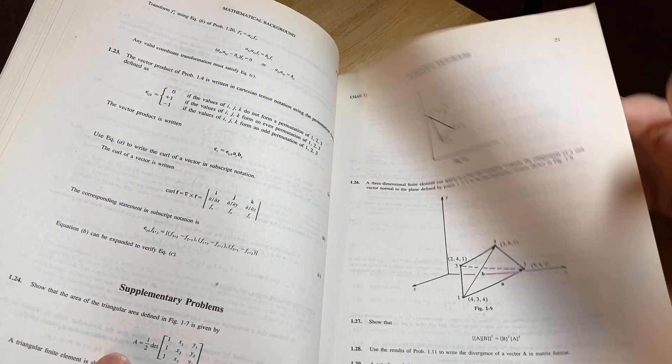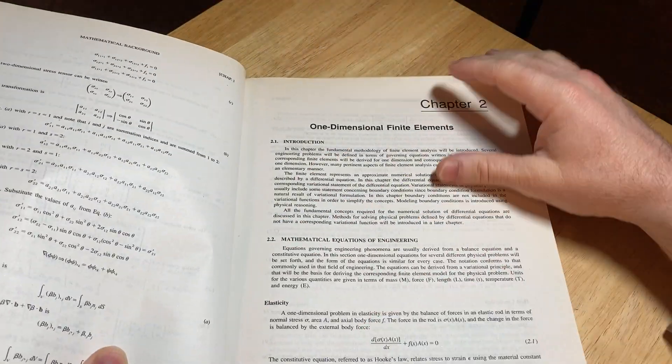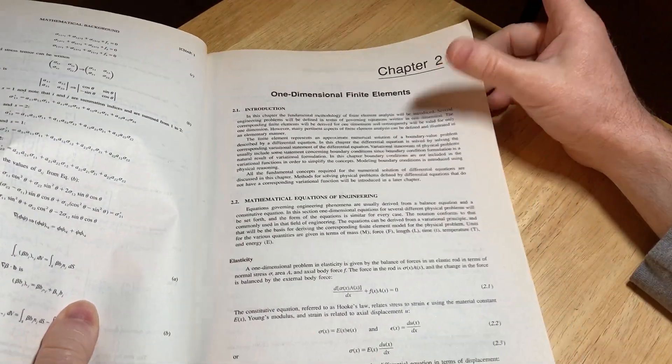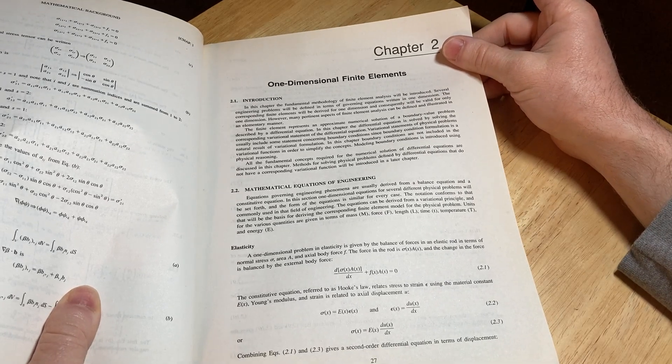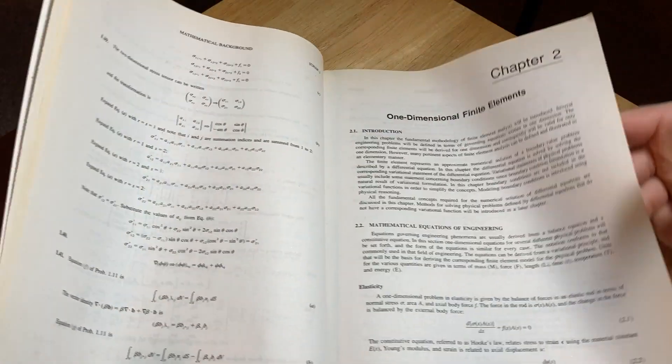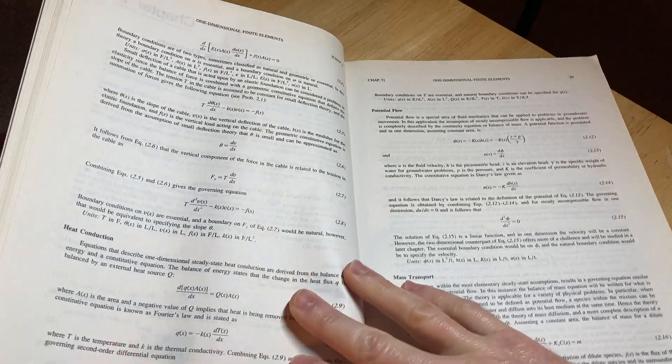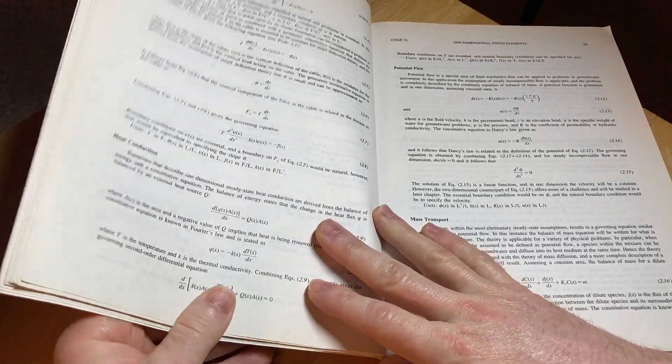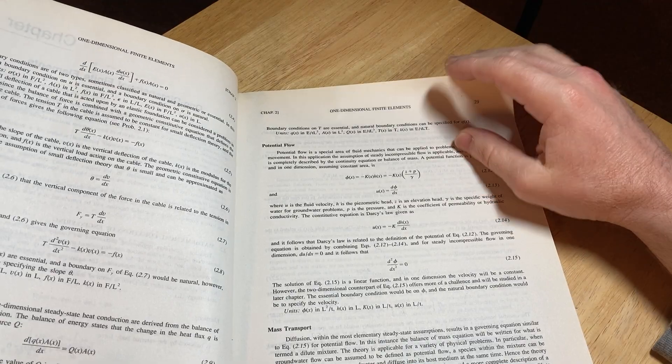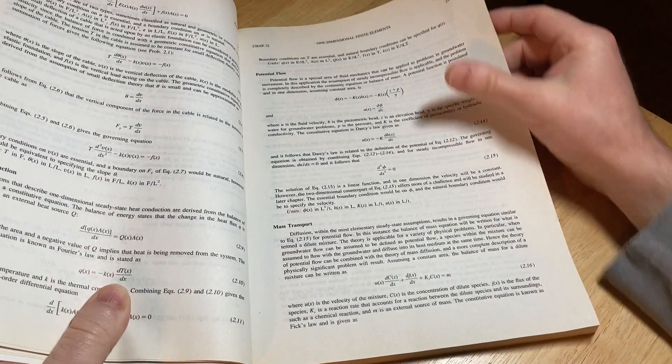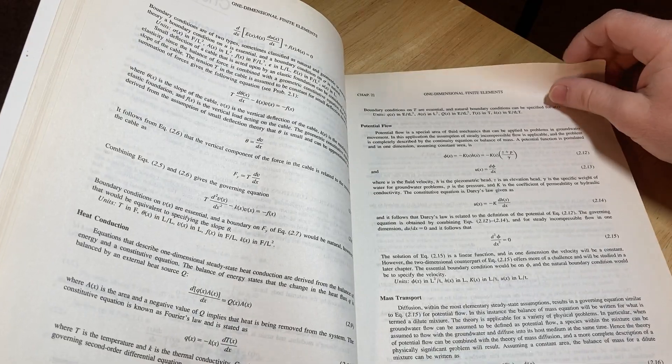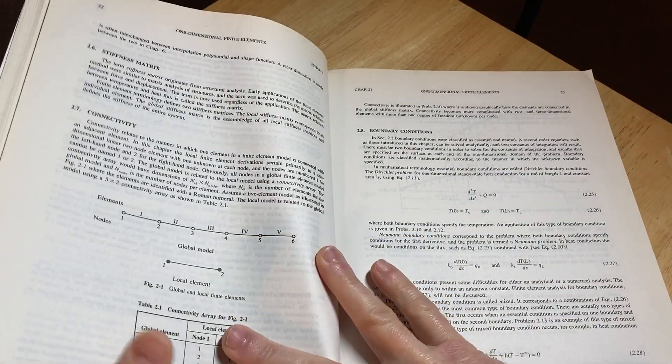Let's go to the meat of this. Here we go. One-dimensional finite elements. Mathematical equations of engineering. Elasticity. We're talking about elasticity. Heat conduction, potential flow, mass transport. We're giving you different things here.